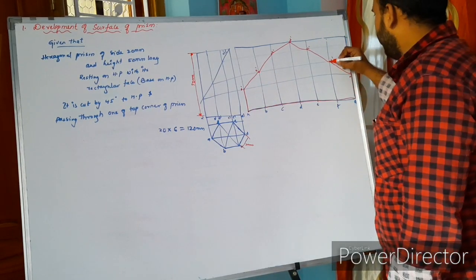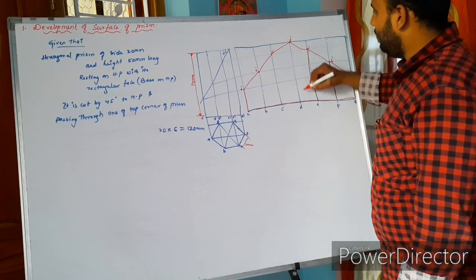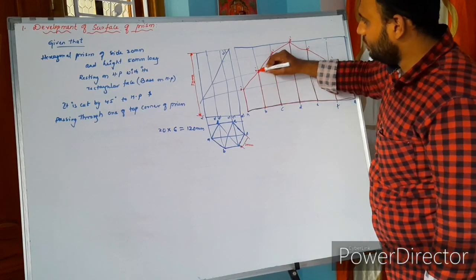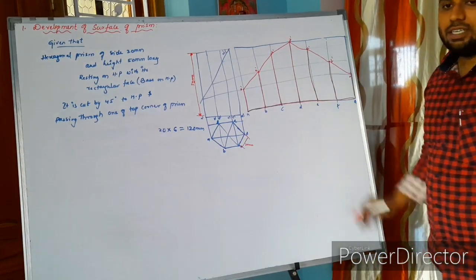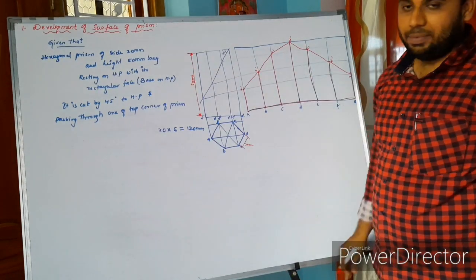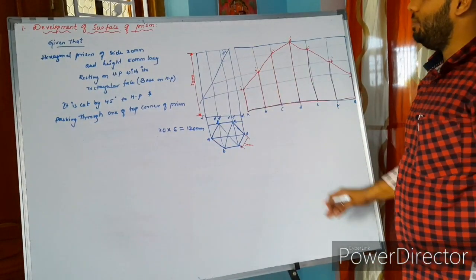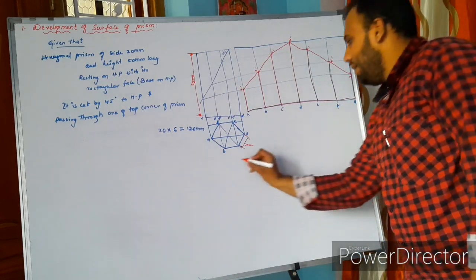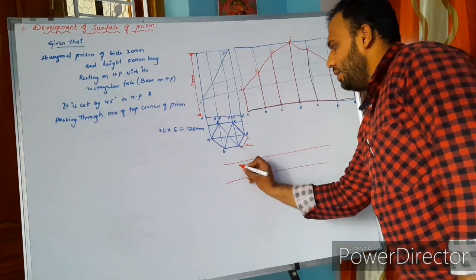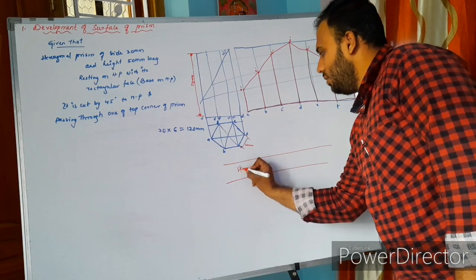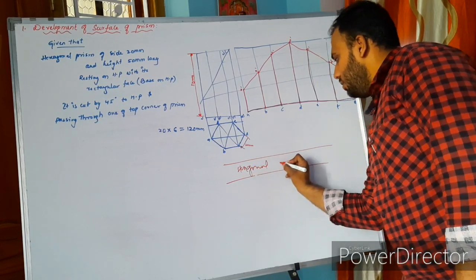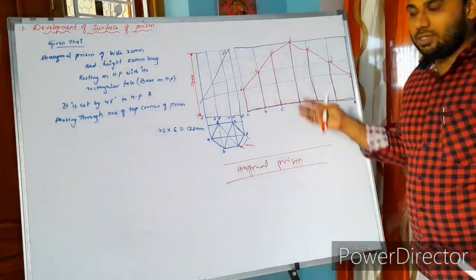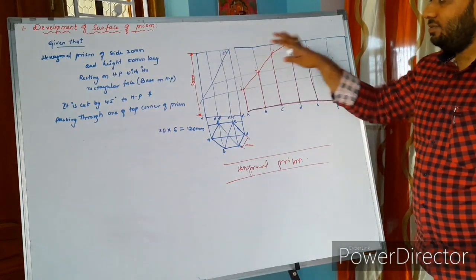Make this all portion in a dark way. That is the development of surface of prism when it is cut by 45 degrees from the top corner of the prism. Indicate the name here perfectly: rectangular hexagonal prism. This is one of the problems you have to copy from the book. Just focus on what I have said here and try to do this.